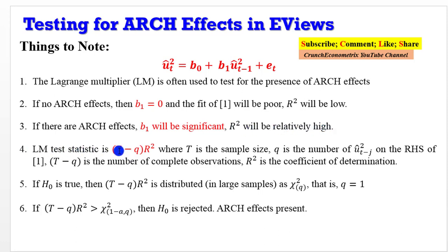The LM test statistic is computed as (T - q) multiplied by R-squared, where T is the sample size, q is the number of u-squared(t-j) on the right-hand side, T-q gives the number of complete observations, and R-squared is the coefficient of determination. If the null is true, then (T - q)R-squared is distributed in large samples as chi-squared_q, in this case q equals 1.